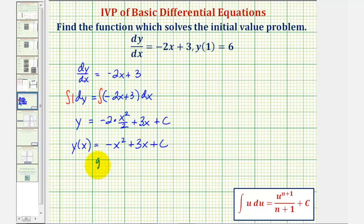Now this is called the general solution where we have a family of functions that would have a derivative of -2x + 3. But because we're given y(1) equals 6, this is an initial value problem, meaning we can find the particular solution or the solution that contains this point here.